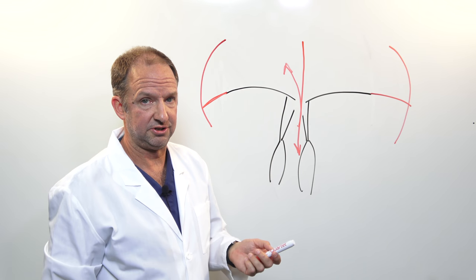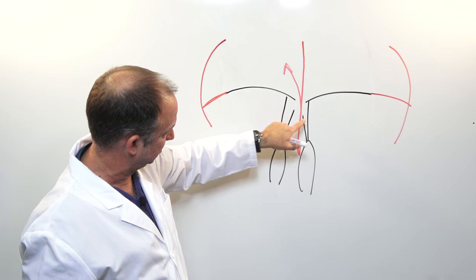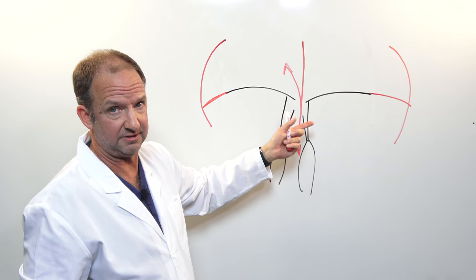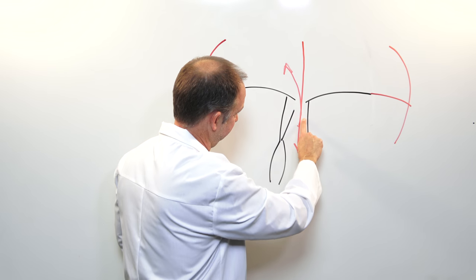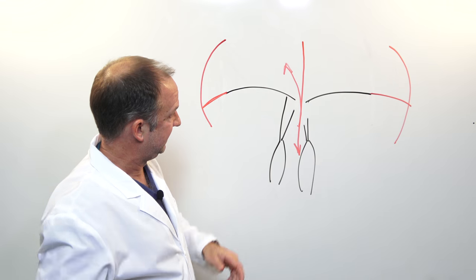Another reason to have mitral insufficiency or a leaking mitral valve is if one of these cords or all of the cords breaks or snaps. In that case,